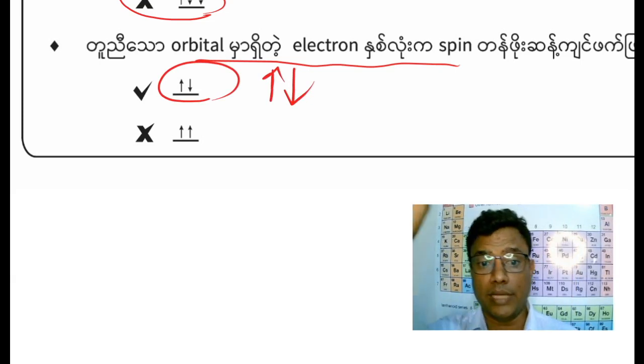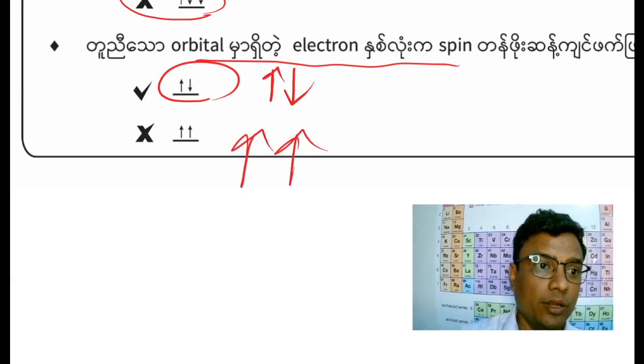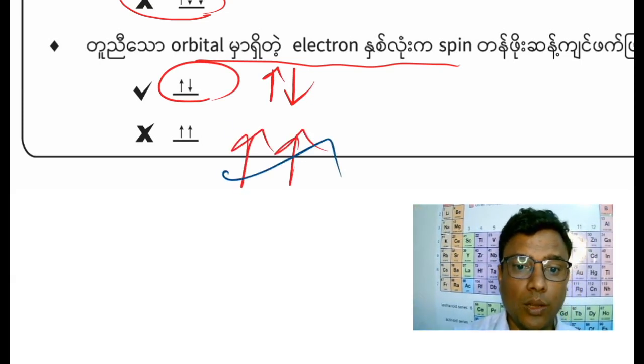Up, down and down. So slowly: up, down and down — representing electrons filling orbitals with opposite spins.